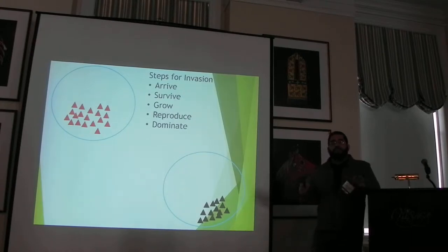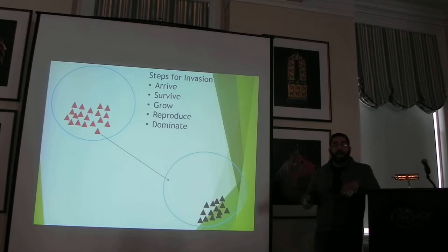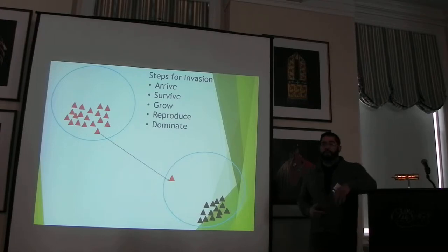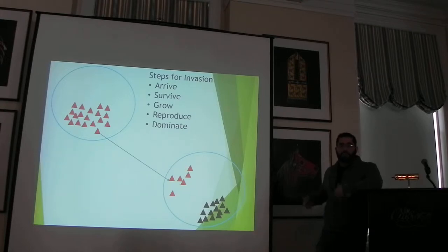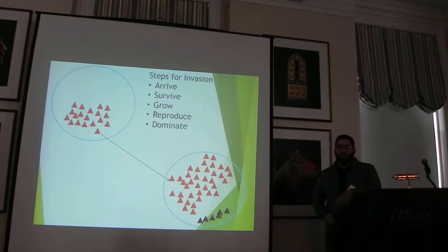Steps for invasion. We know invasive species just don't show up in a lake. They go through a step-wise process when they go from one lake to the next lake. First, they need to arrive to the water body and survive that transit condition, get to that water body and survive the conditions of the new lake — temperature, oxygen, pH, or biotic factors — grow and reproduce to a level where they can start exerting negative impacts on native flora and fauna. Pretty much just a basic spread idea.